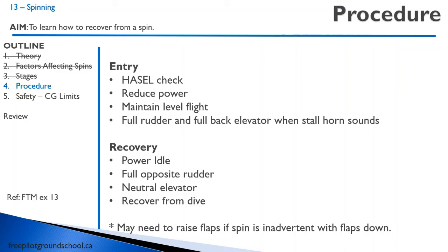The wing will drop and you will enter a spin. The recovery must be from memory: power idle, full opposite rudder, neutralize the elevator, and recover from the dive. Regarding the dive recovery — in a spin you could end up inverted at some point, so you will pick up a lot of speed. You don't want to over-stress the airplane. If you have a choice between exceeding G limits or speed limits, you're better off exceeding speed limits slightly. If you have flaps down inadvertently, get the flaps up right away.